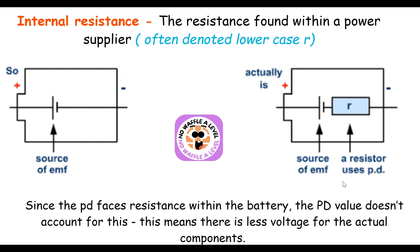The second new A-level concept is internal resistance — the resistance found within the power supply itself, such as inside the battery. External resistance in the circuit uses uppercase R, while internal resistance uses lowercase r. In circuit diagrams, the power supply and internal resistance are shown together in a box, with a small resistor symbol labelled r next to the EMF source to symbolize the internal resistance.